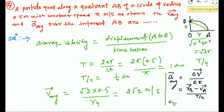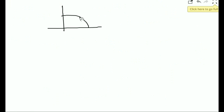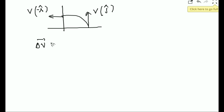Velocity at point B: since the speed is π and the direction at B is along negative i-hat, velocity at B is −π·i. Velocity at point A: direction is along j-hat, so velocity at A is π·j. Therefore, Δv = velocity at B minus velocity at A = −πi − πj, which factors as −π(i + j).